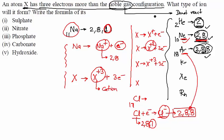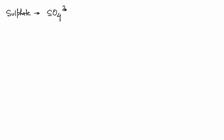So atom X has three electrons more than the noble gas configuration. It will lose three electrons and form X³⁺ — a cation. Now let's write the formula. First, sulfate: sulfate is SO₄²⁻. We have X³⁺ and SO₄²⁻, so take SO₄ in brackets because it's a complex anion.